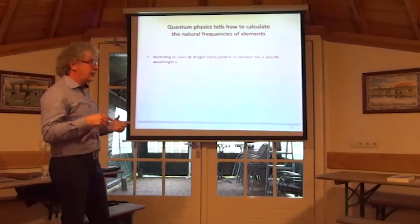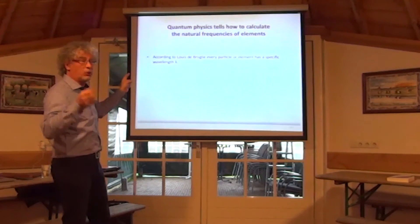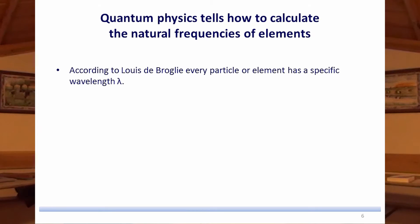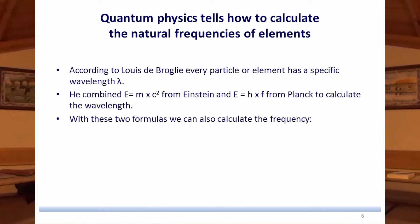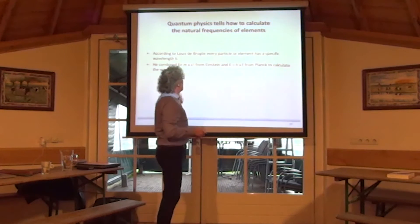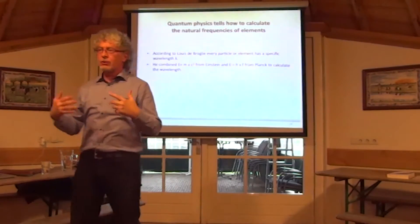A French scientist, very well known in basic quantum physics, said every particle or element has a specific wavelength. This is from Einstein: energy equals mass times the square of the speed of light. And Max Planck said energy equals a natural constant times frequency. Both describe energy, and you can probably combine these two formulas to find out the wavelength — or also the frequency.